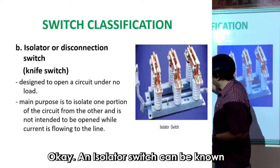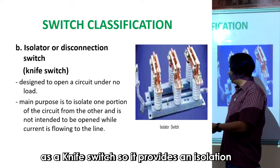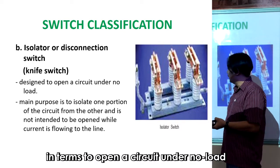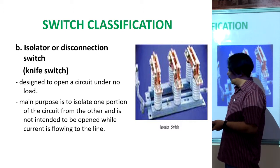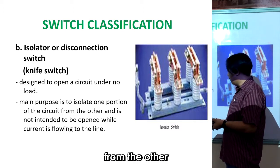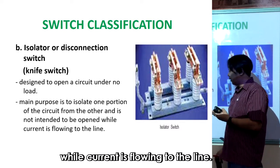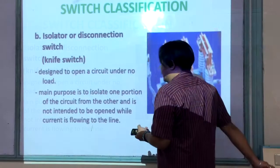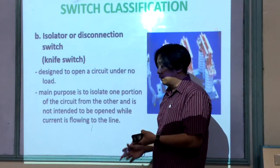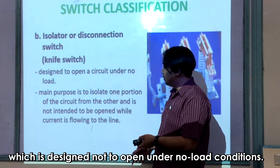An isolator switch, also known as a knife switch, provides isolation by opening a circuit under no load. Its main purpose is to isolate one portion of the circuit from the other, and it is intended to be opened when current is not flowing. It is essentially a low voltage switch designed not to open under load conditions.